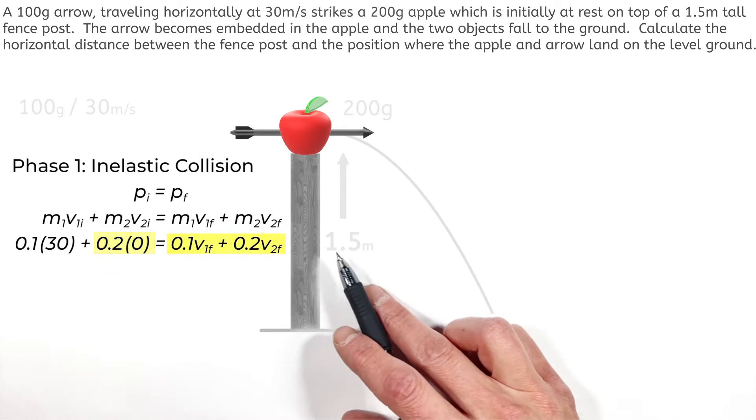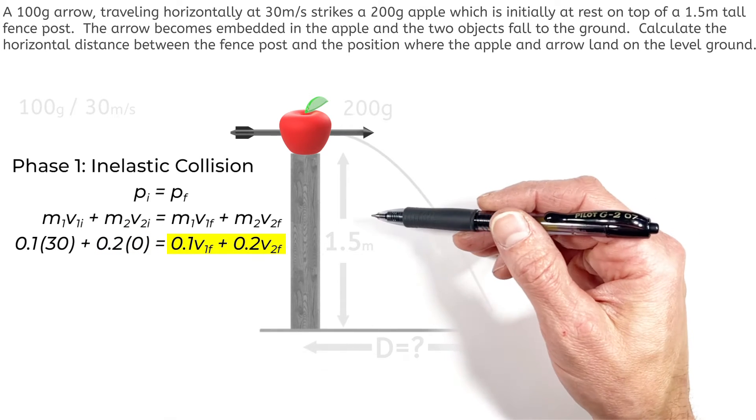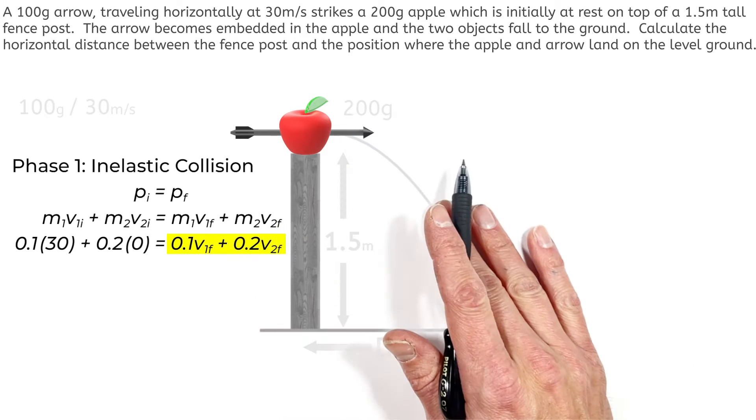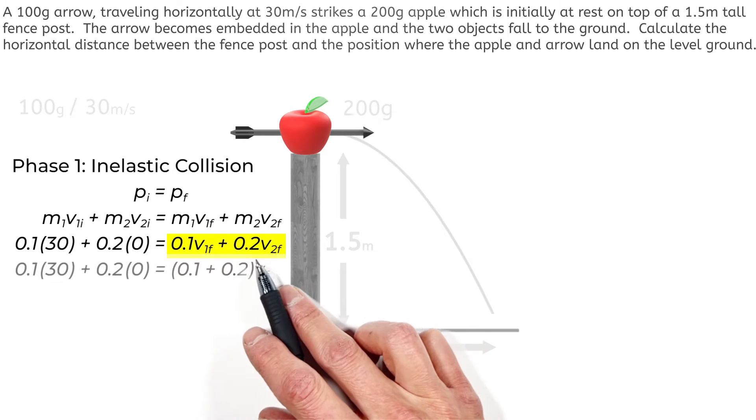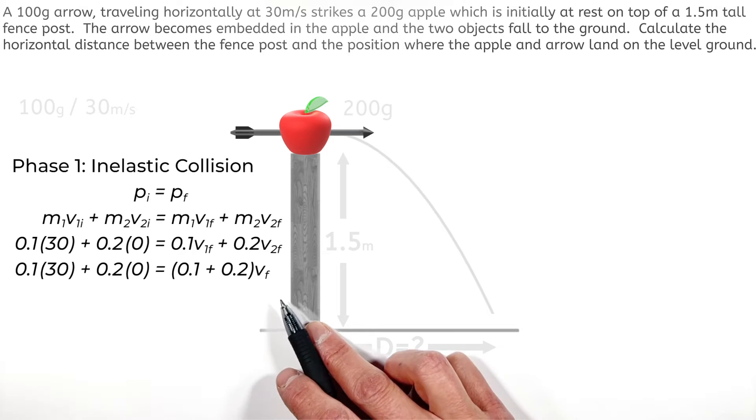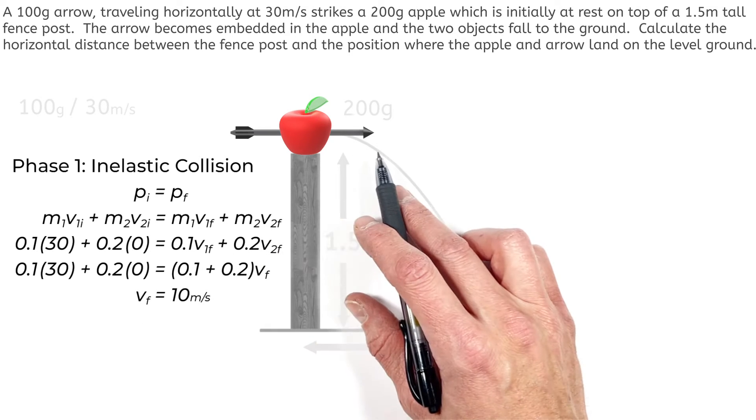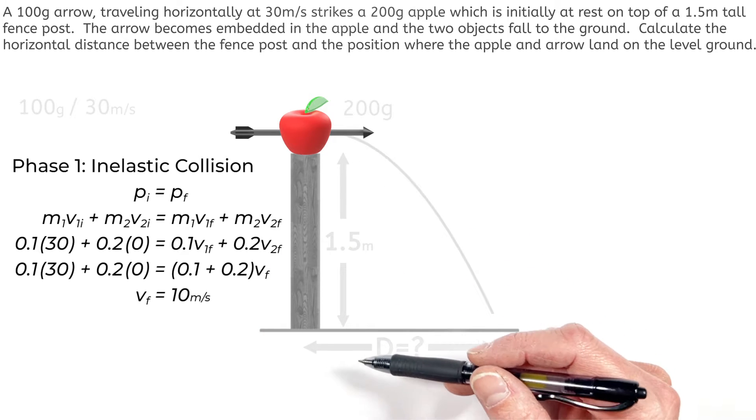Now after the collision, both of these objects are going to be moving at some final velocity. And it's important to recognize that the two objects are going to be moving together, therefore they're going to have the same velocity. So we can combine our two terms over here for velocity, leaving us with this. And solving for the final velocity, we get that just after the collision, the apple and the arrow are moving at 10 meters per second horizontally.